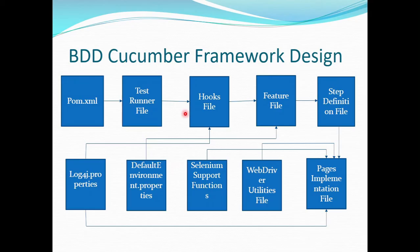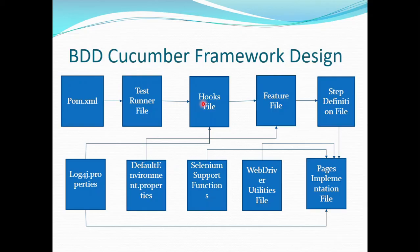These are all the files we are going to create and design in our future videos. When you queue a scenario for execution, first it downloads all the dependencies using the pom.xml file. Then it goes to the TestRunner file to identify which scenario to run. Once it finds the condition, it goes to the Hooks file and executes any @Before hooks defined. After that, it looks for the scenario matching the tag defined in the TestRunner, then starts execution and identifies each test step to perform. For every step, it looks in the step definition file for the implementation.